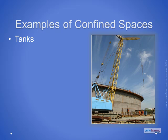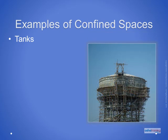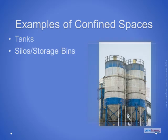Tanks built on top of the ground would be considered confined spaces once constructed to the point where they must be entered through a portal or other small opening on the side or the top, such as this elevated water tank, which is entered vertically through a portal on top. Silos entered through a manway or hatch on the top, side, or bottom could be considered a confined space, as are similarly constructed storage bins.